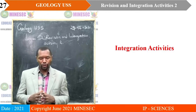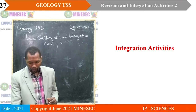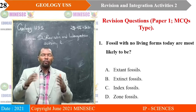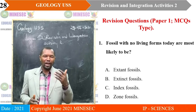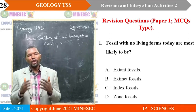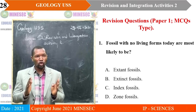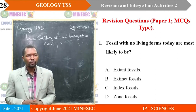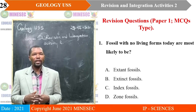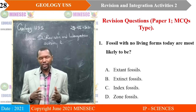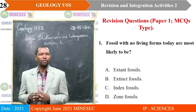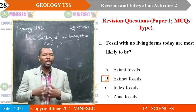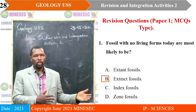We shall now dive into integration activities, beginning with paper one MCQ-type questions. For each question, there are four answers — three are distractors and only one is correct. Question one: fossils with no living forms today are most likely — A. Extant fossils, B. Extinct fossils, C. Index fossils, D. Zone fossils. Correct answer is B, extinct fossils. They have gone to extinction and don't have living forms today.